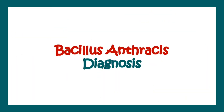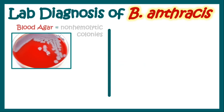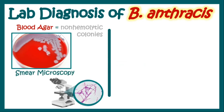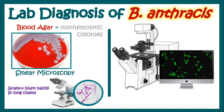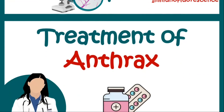Diagnosis of Bacillus anthracis in clinical samples involves culturing on blood agar, which gives non-hemolytic colonies. Smear microscopy can be done from the culture plates and reveals gram-positive blunt bacilli in long chains. Apart from that, immunofluorescent studies can also be performed, which will show anthrax bacilli.